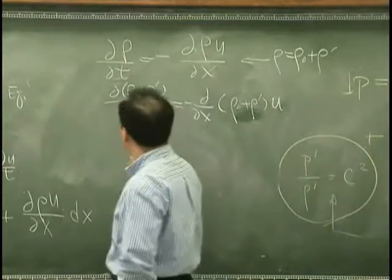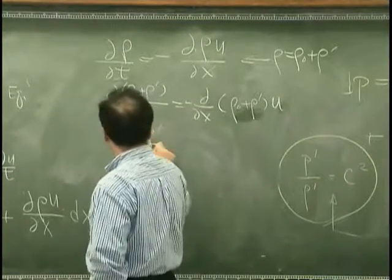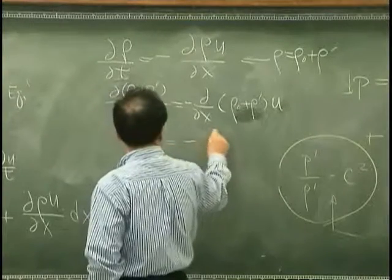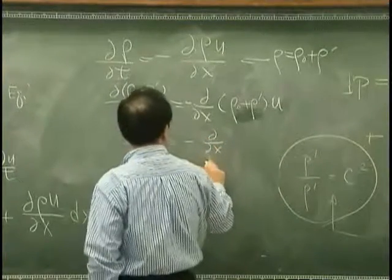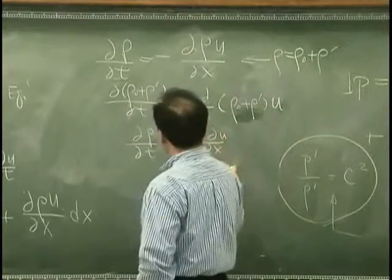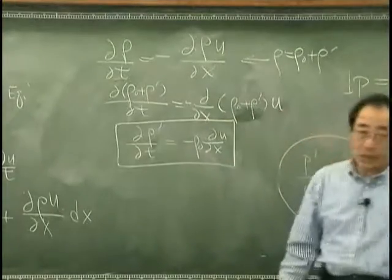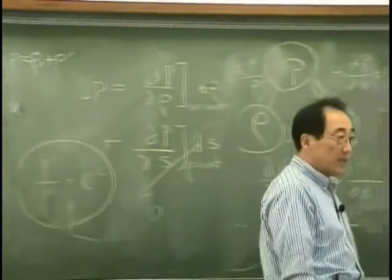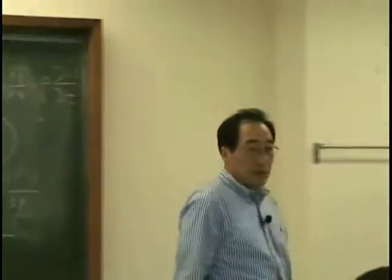I will have d rho prime/dt is equal to minus d/dx rho zero U. And that is conservation of mass, one dimensional case.